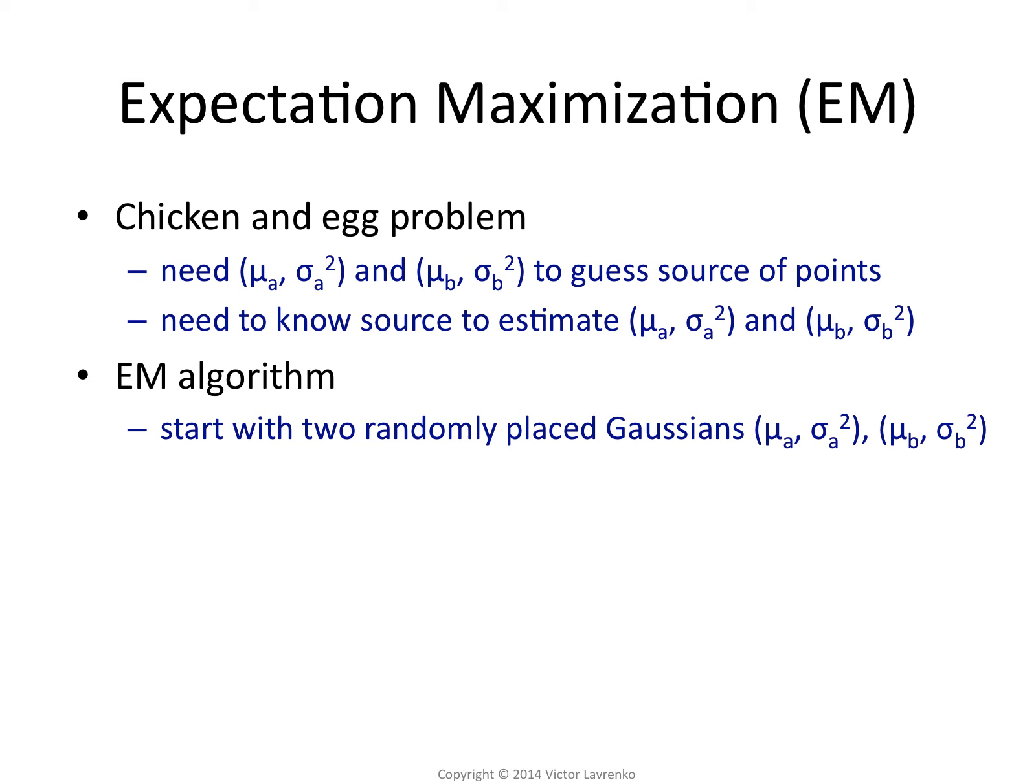you come up with random variances for the yellow and blue. So you place them somewhere in space. And you use that as a starting point for an iterative algorithm. You're going to take those randomly placed Gaussians...